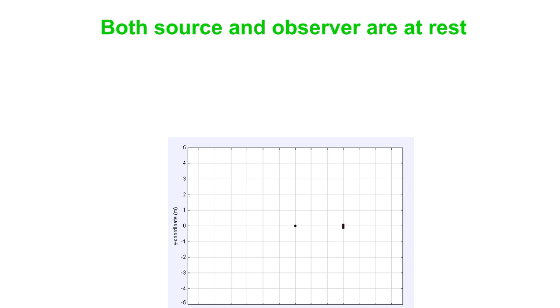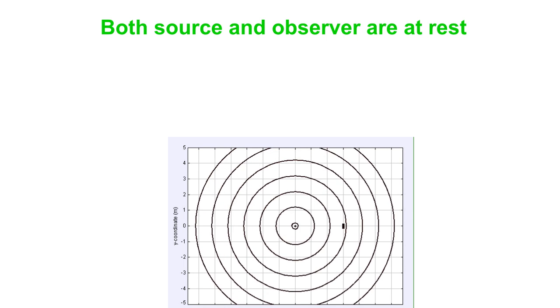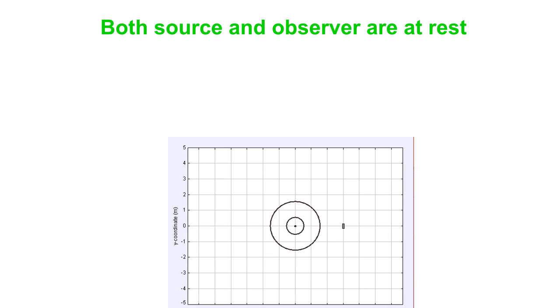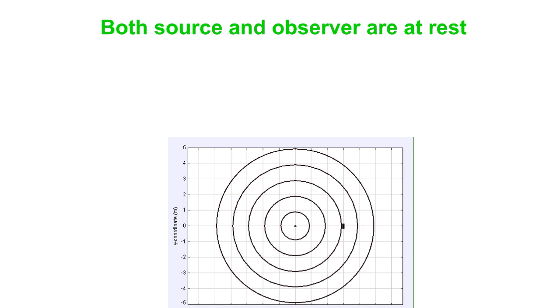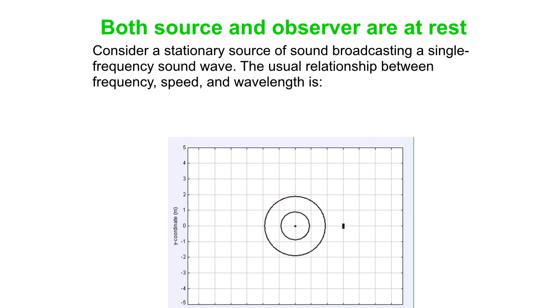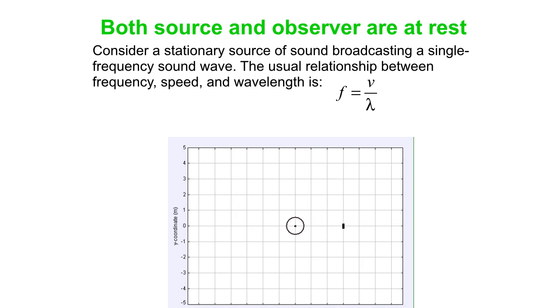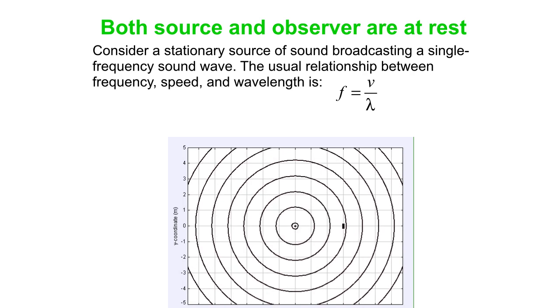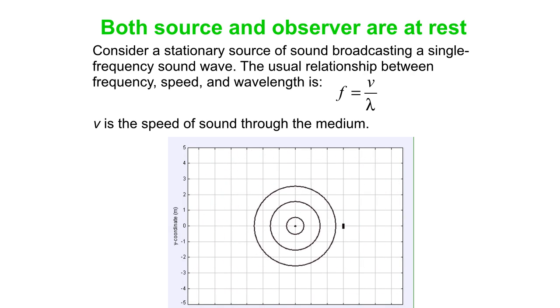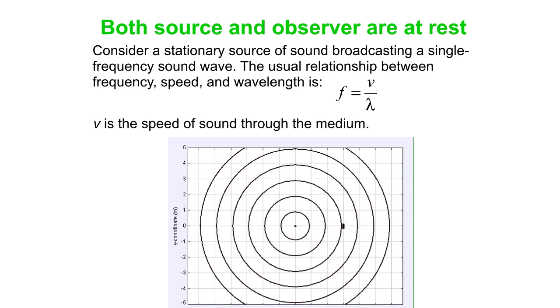Okay, so let's just start with the basics when both the source and the observer are at rest. So the source is a little dot in the center of the picture there, and the observer is kind of a little black rectangle off to the right. And so what we have is the usual relationship connecting frequency, speed, and wavelength. That is V over lambda. And V here is the speed of the sound through the medium itself.